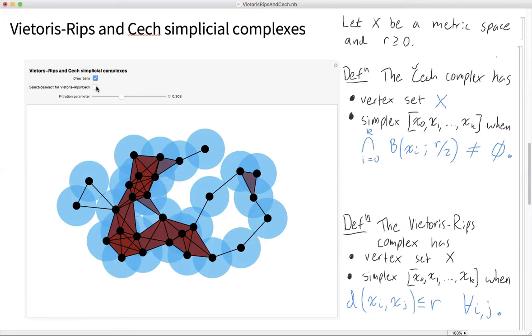A couple of comments. The Čech complex is better for theory, usually, just because the Čech complex is homotopy equivalent or has the same topological properties as the union of the balls.